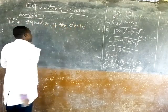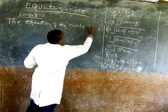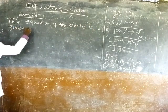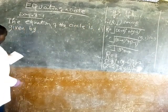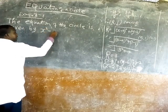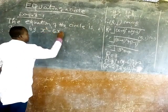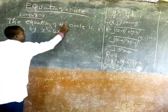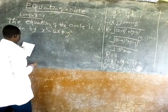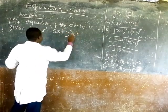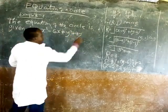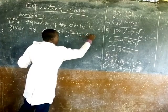The equation of the circle is given by x squared minus 6x plus y squared plus 4y minus 3 is equal to 0.